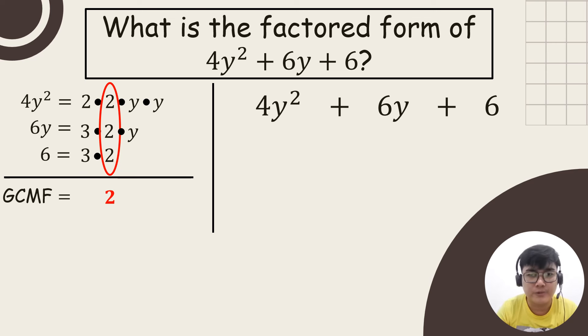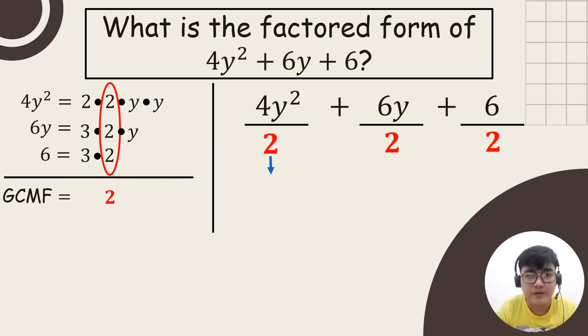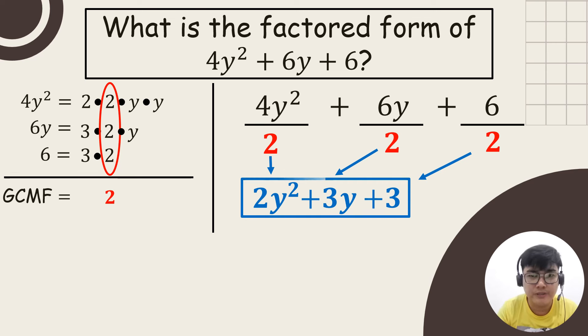We will list our given 4y squared plus 6y plus 6. Since there are three terms, we will divide each term by our GCMF which is 2. 4y squared divided by 2 the answer is 2y squared. 6y divided by 2 the answer is 3y. And the last term, 6 divided by 2 the answer is 3. So therefore, this will serve as our second factor to the final answer.